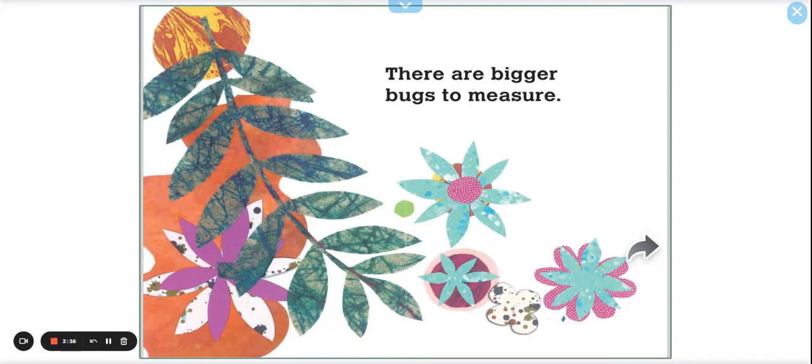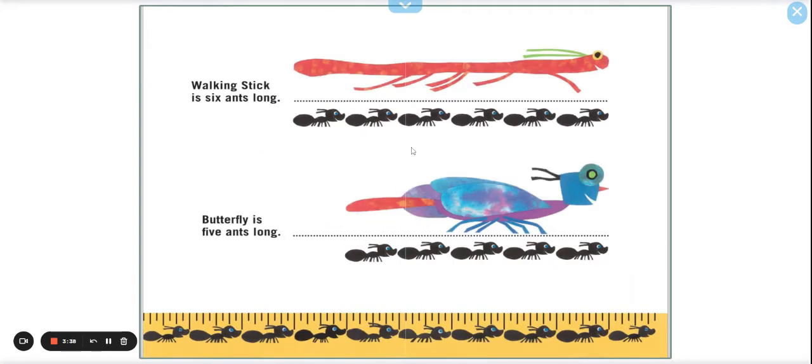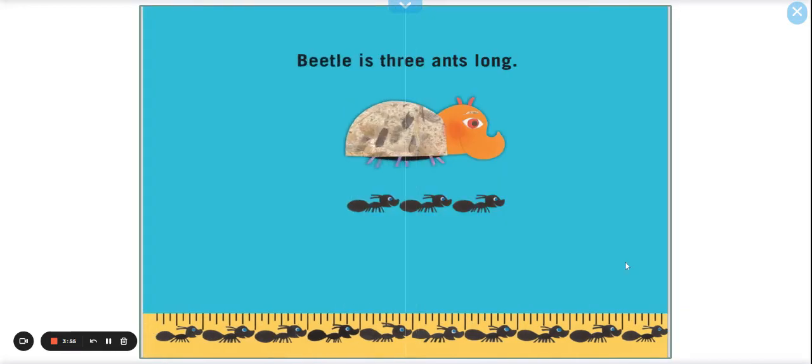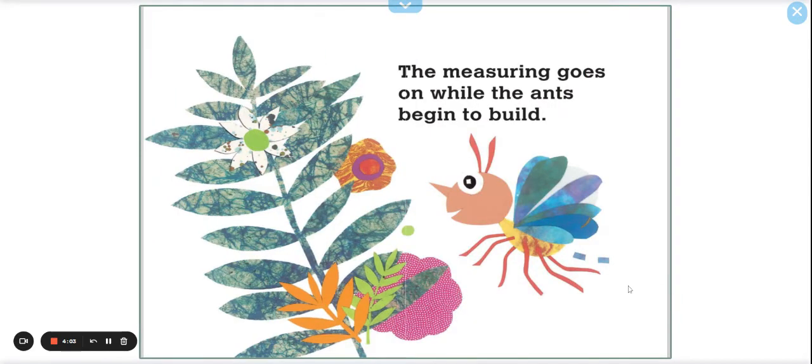There are bigger bugs to measure. Walking stick is six ants long. So look, we can count them. One, two, three, four, five, six. And the butterfly is five ants long. One, two, three, four, and five. So remember, ants are our unit of measure. It says beetle is three ants long. The measuring goes on while the ants begin to build.